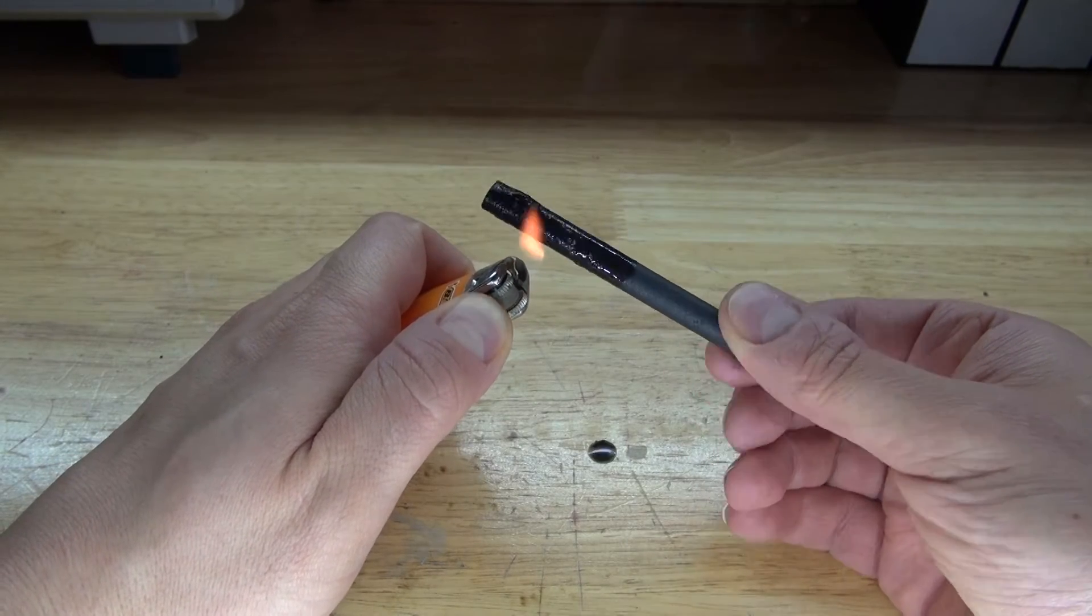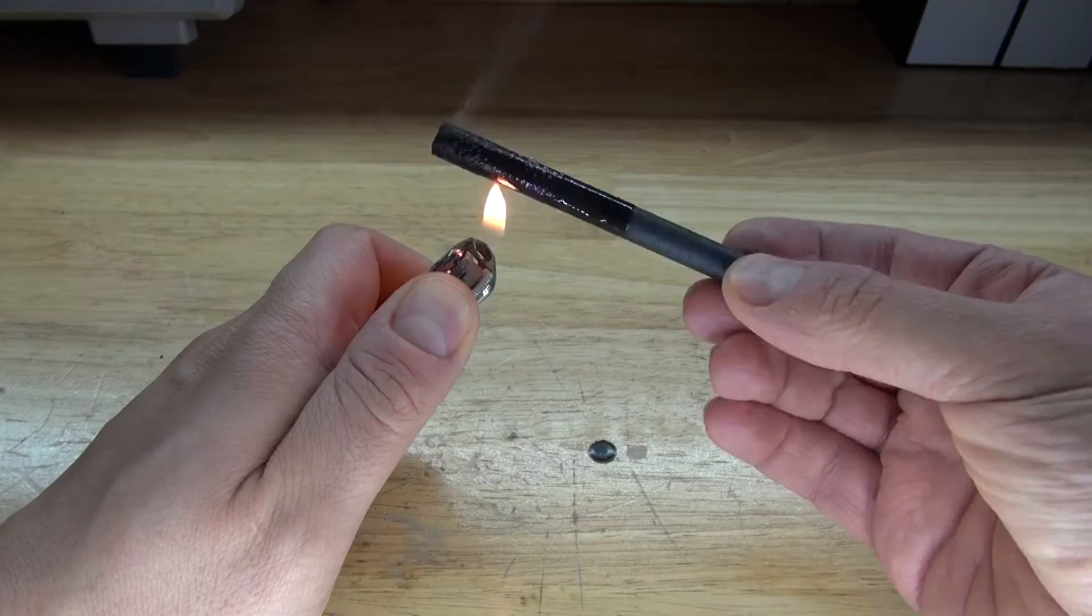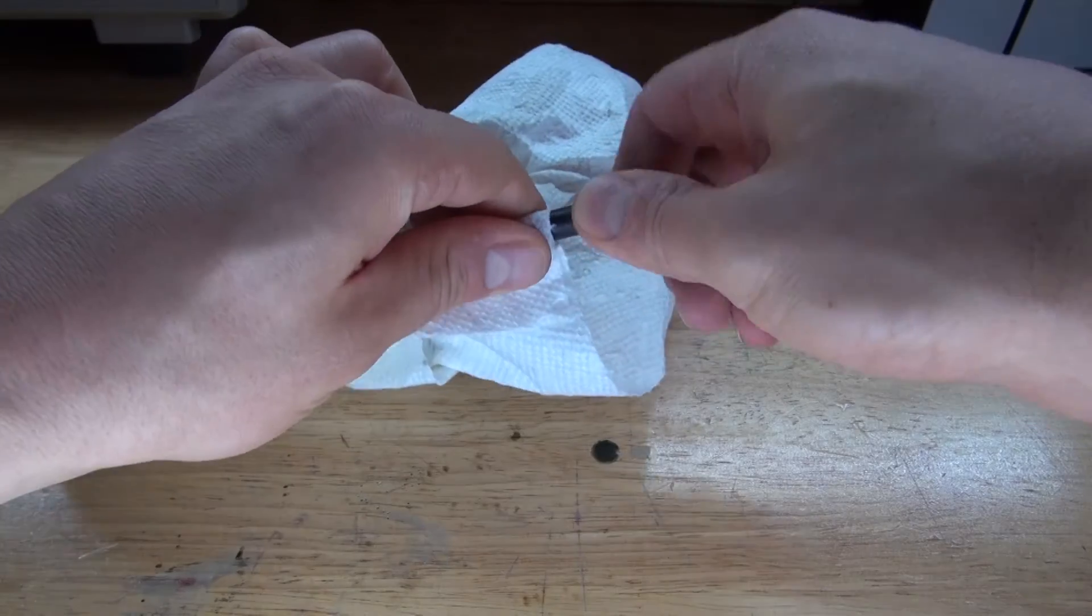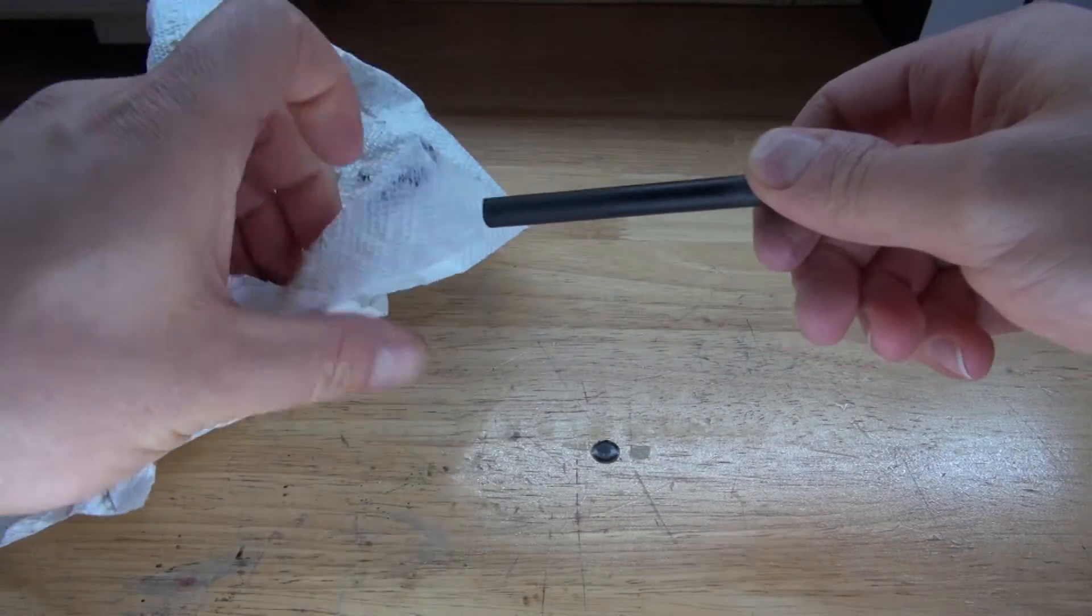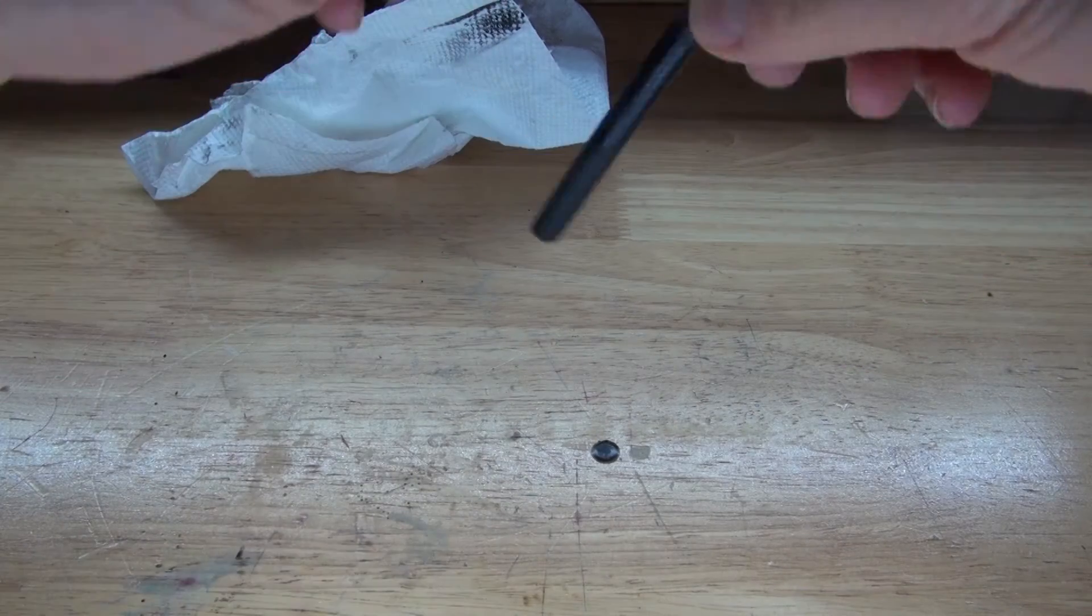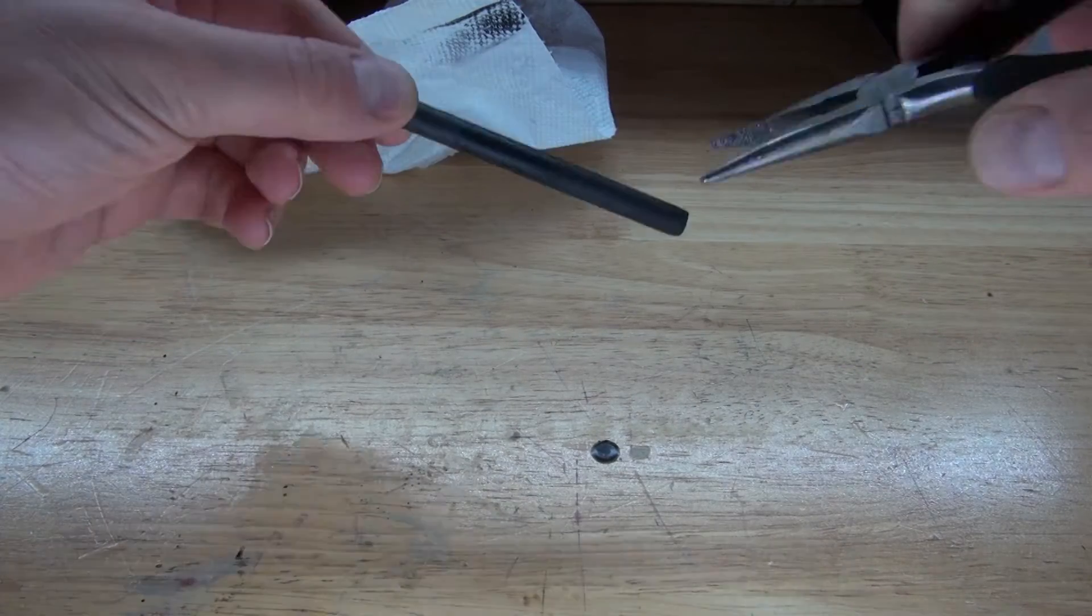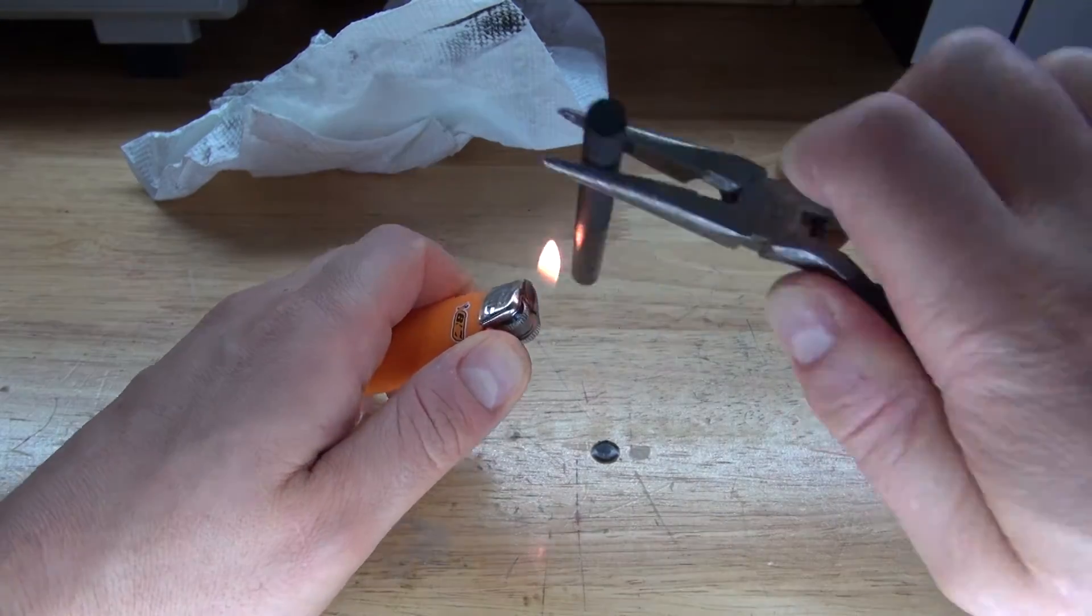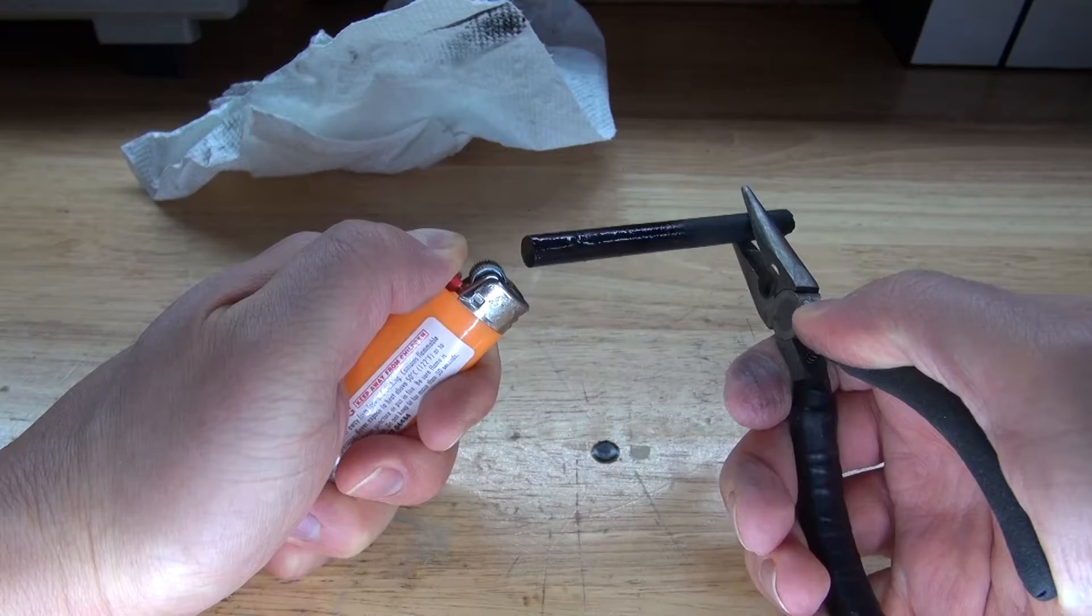And one important thing I must say, you should do this in a well ventilated area because the smoke will irritate your eyes. Next take a paper towel and wipe off the excess burnt wax. As you can see, this side of the carbon rod is now clean. I need to repeat the same process on the opposite end. And there, the carbon electrode rod is now clean.